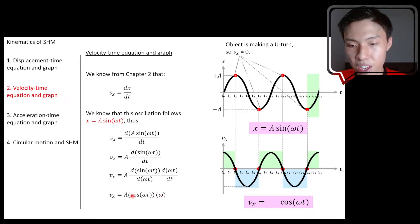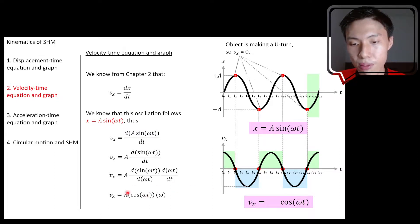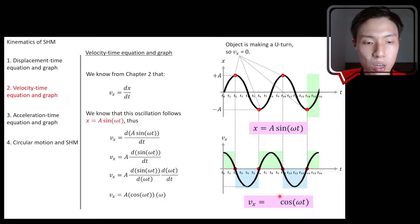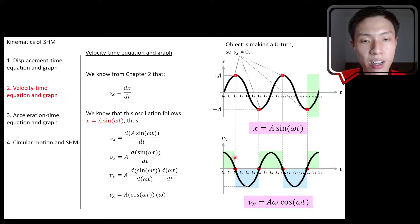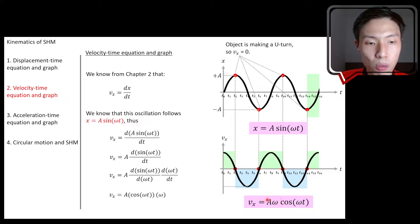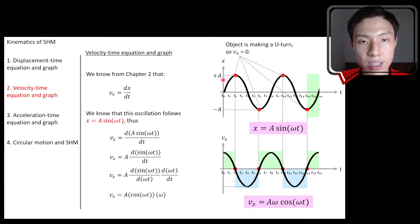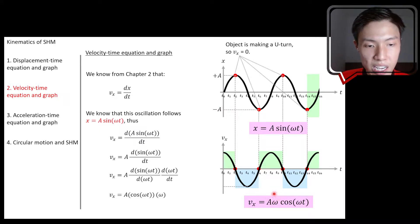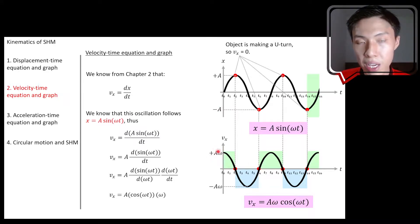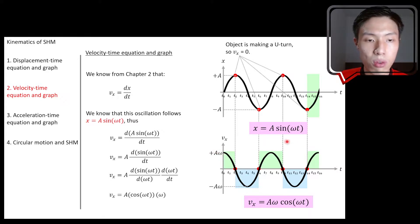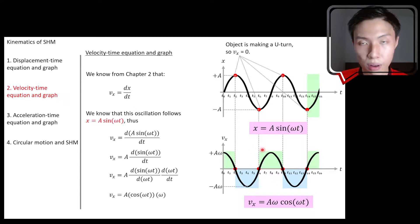Once you reach this step, rearrange the equation. You can see that A times omega is in front, multiplied by cos(ωt). So what you should fill in for the amplitude of the velocity equation is Aω. The maximum velocity is positive Aω and the minimum is negative Aω. That is how you draw the velocity-time graph, and this is the equation: vx = Aω cos(ωt).